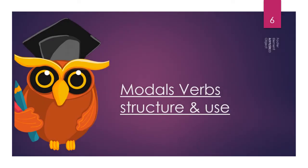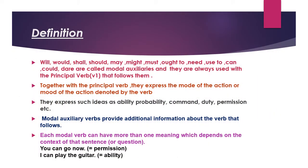Good morning students. This is our very first online chapter of English grammar and it will be in two parts. The topic is modal verbs — structure and uses. First of all, let's look at what modals are. As we have studied earlier, you must have come across these words in sentences: will, would, shall, should, may, might, must, ought to, need, used to, can, could, dare. These are all called modal auxiliary verbs.